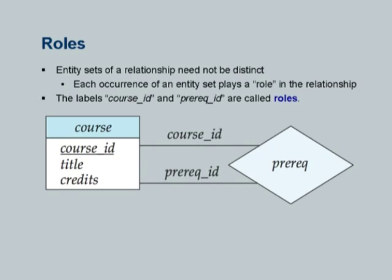If I just say that prerequisite has CS352 and CS313, is 352 a prerequisite for 313 or is 313 a prerequisite for 352? I will get confused. Therefore, I need to put role labels on edges. One edge I am going to label as course ID and the other as prerequisite, indicating this course is a prerequisite for this other course. That is how we use role labels on edges whenever a relationship loops back to the same entity participating more than once. You can always put a role label on an edge anytime to make explicit what it is.